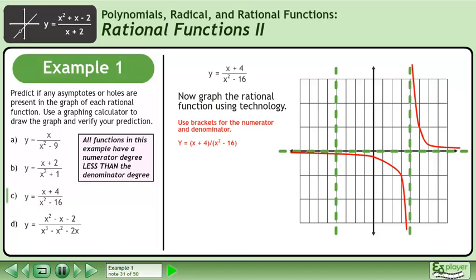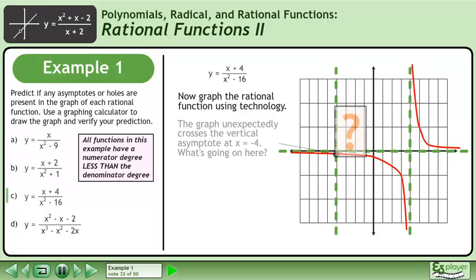Now graph the rational function using technology. Use brackets for the numerator and denominator. The graph unexpectedly crosses the vertical asymptote at x equals negative 4. What's going on here?